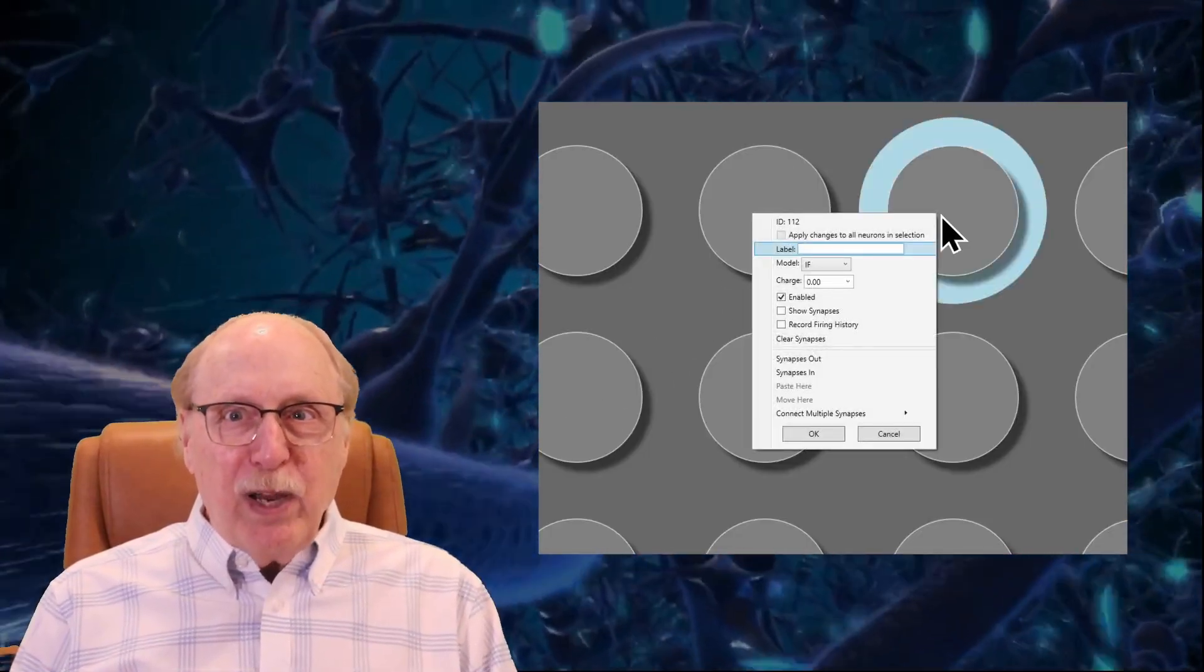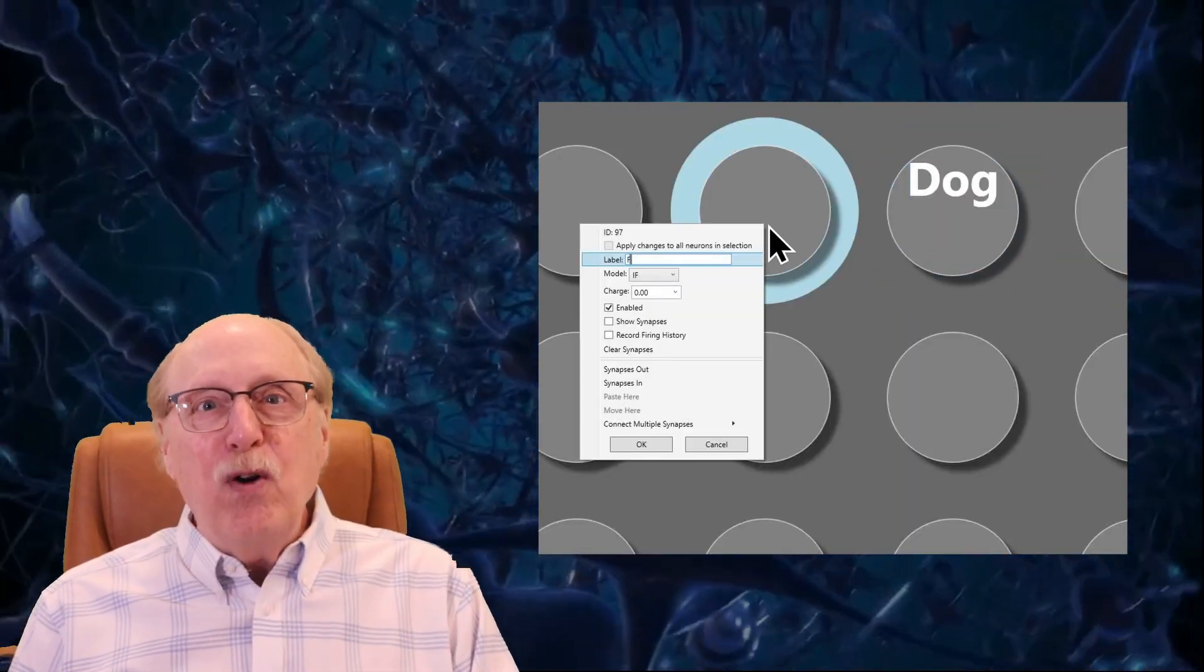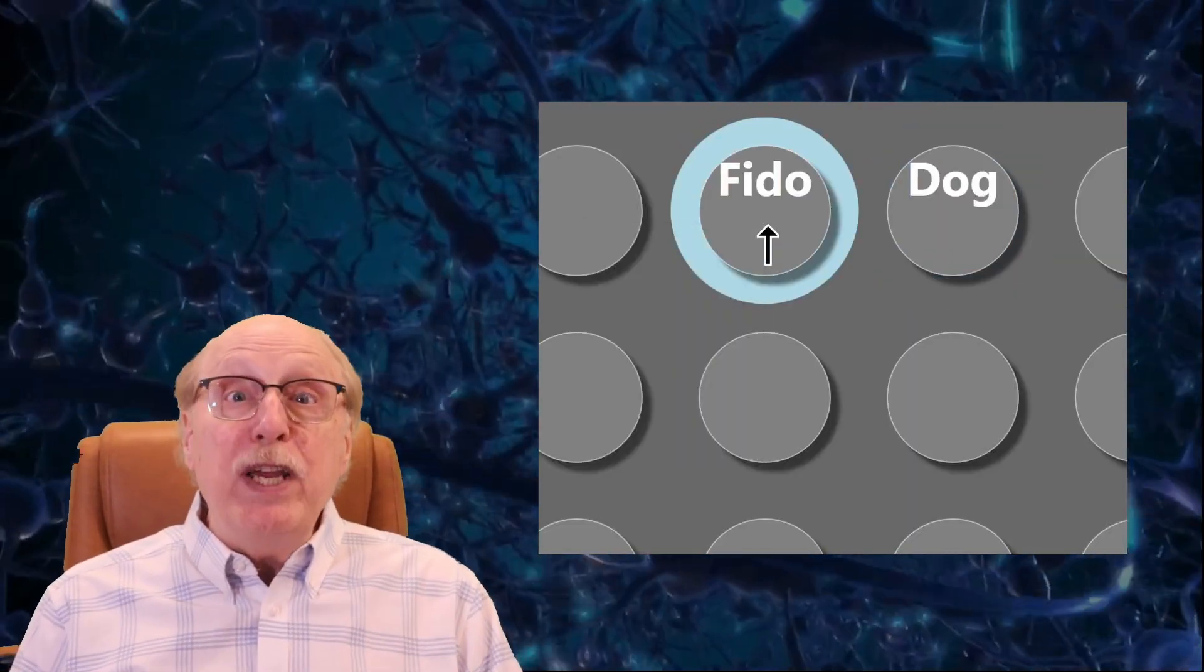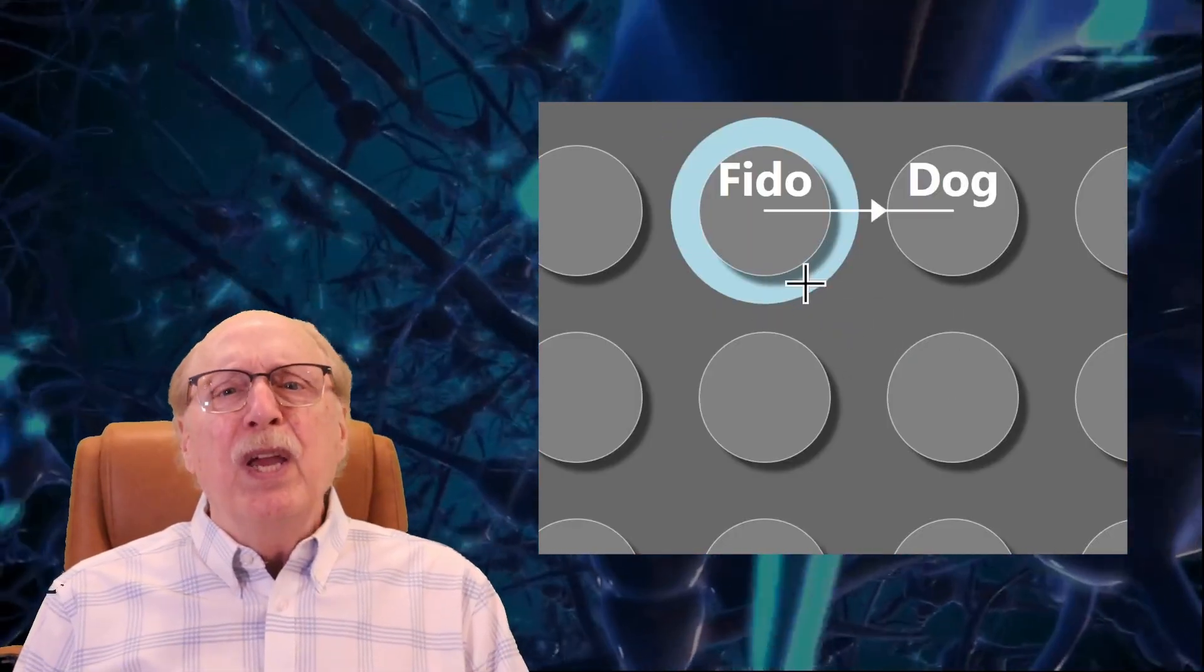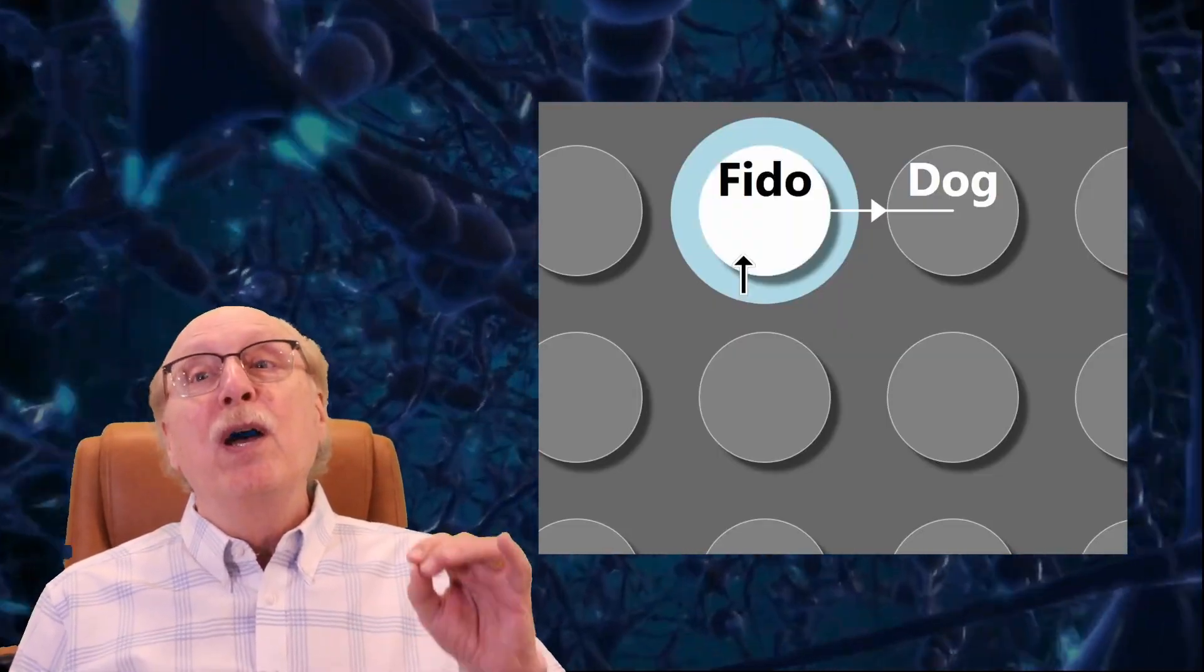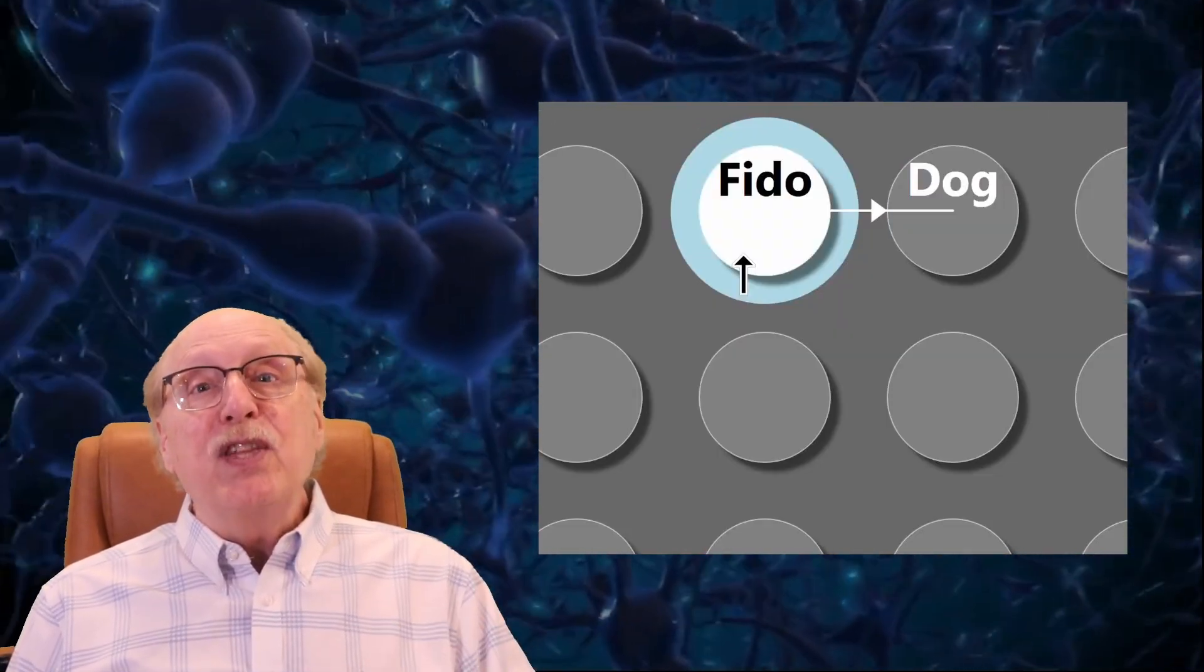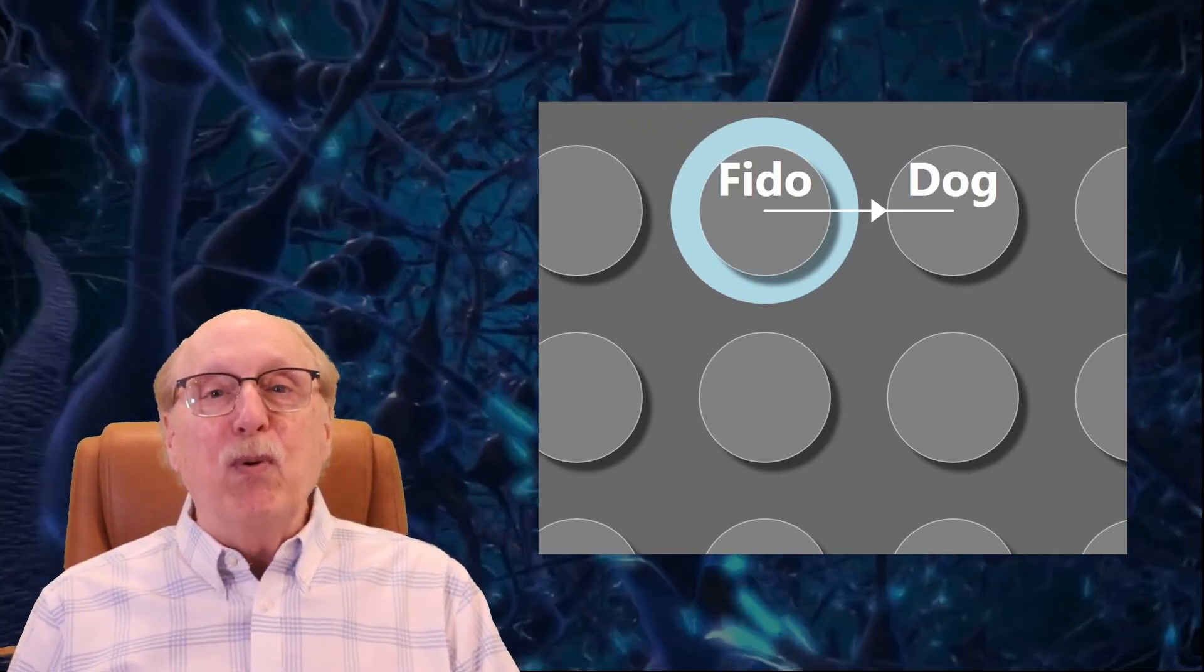If we speculated that you have a neuron representing dog and another representing Fido, it's the connection between the two that could represent the idea that Fido was a dog. Your neurons can't actually work this way, as I'll explain down the road, but the key idea is that it's the synaptic connections between concepts that are important to intelligence.